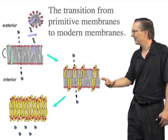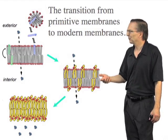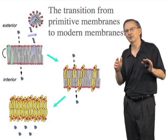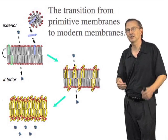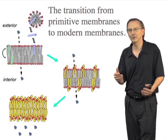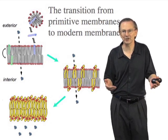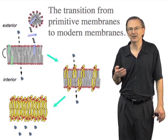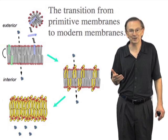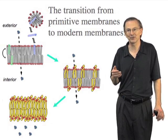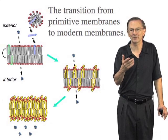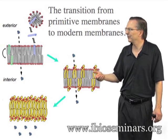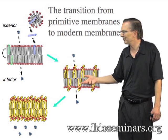What would an intermediate stage look like? Probably it would look like a fatty acid membrane with a small amount of phospholipid doped into the structure. If you think of a protocell containing genetic molecules, if one of those sequences happens to be a simple acyl transfer ribozyme that could make phospholipids — after all, it's a simple, single, one-step acyl transfer reaction — you could imagine making just a little bit of phospholipid as an initial step in this transformation.